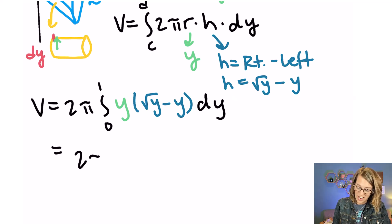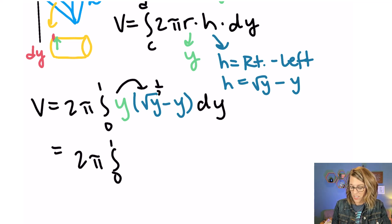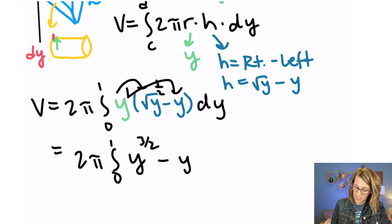As I work through it, I get 2π here, 0 to 1. I'm going to distribute that y. So I'm going to think of the square root of y as a 1/2 power instead. So that y to the first times y^(1/2) gives me y^(3/2) and then I get a y^2 here. So minus y^2 and then a dy.